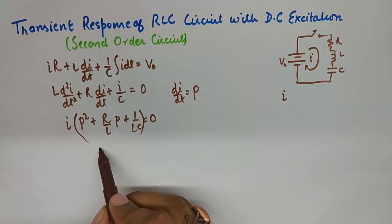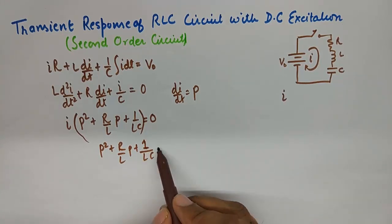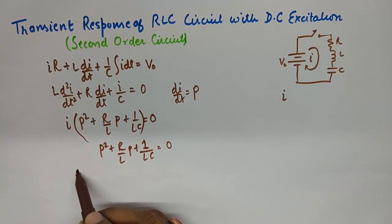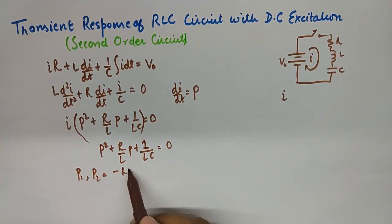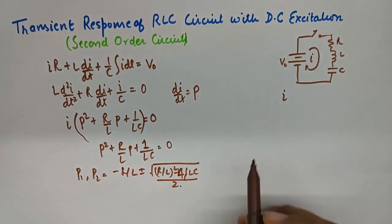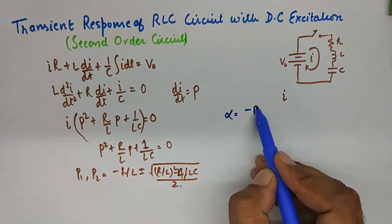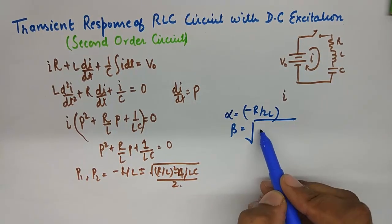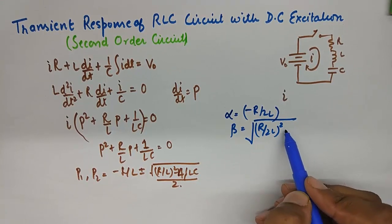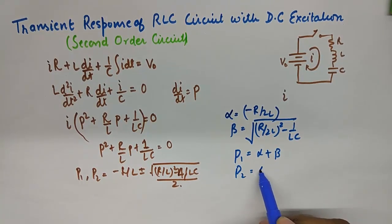We need to find out the roots. They'll be something like this. Now we'll assume alpha to be equivalent to minus R by 2L and beta to be equivalent to R by 2L square minus 1 upon LC, and the roots become alpha plus beta and the other root becomes alpha minus beta.